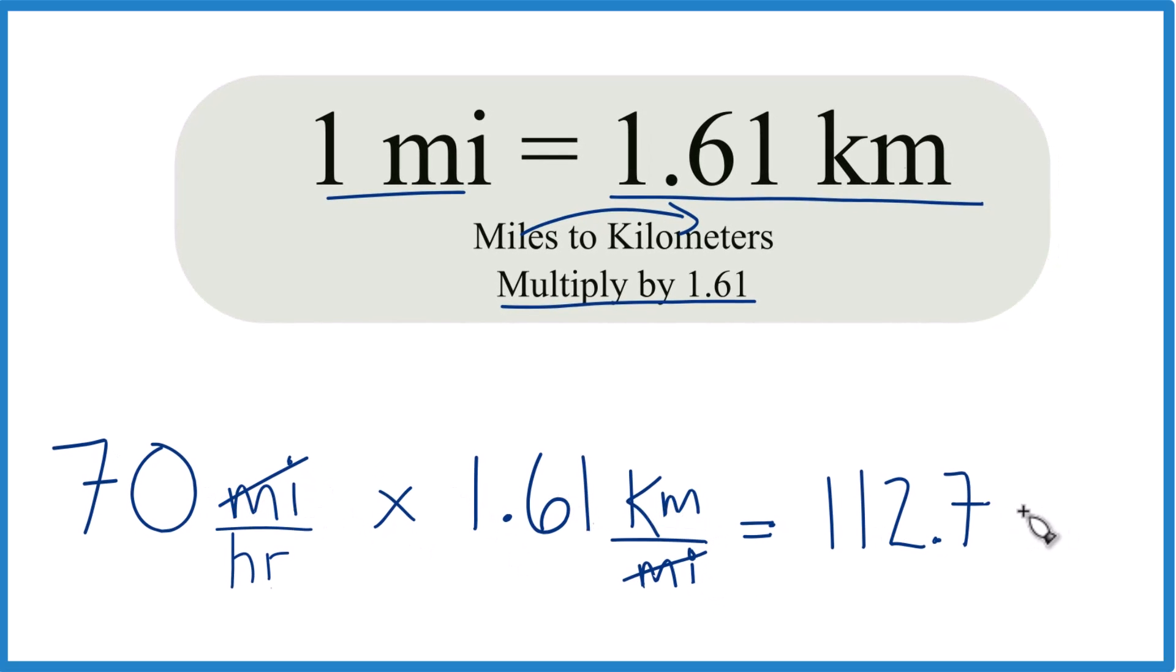They cancel out. So we have kilometers on the top, and then we have hours on the bottom. So 112.7 kilometers per hour. That's what we get when we change 70 MPH to kilometers per hour.